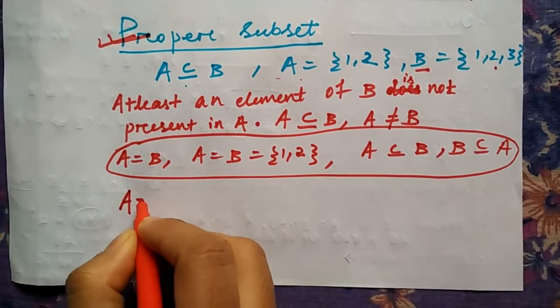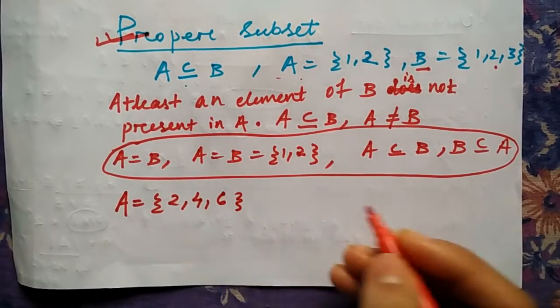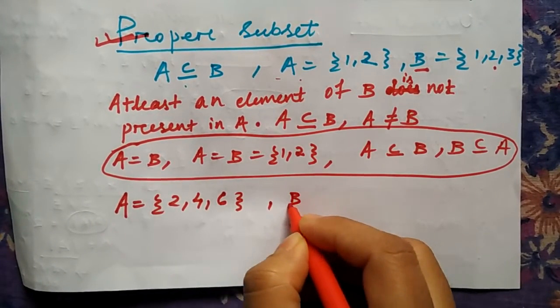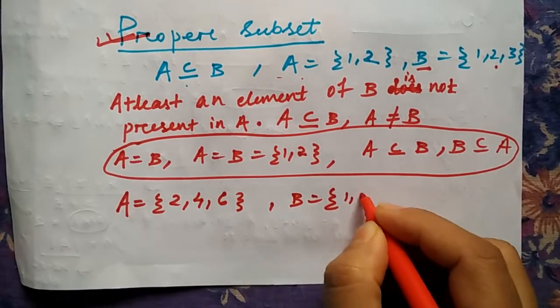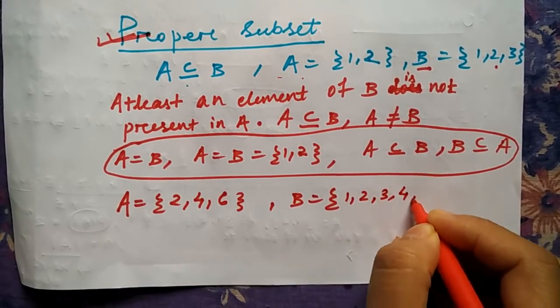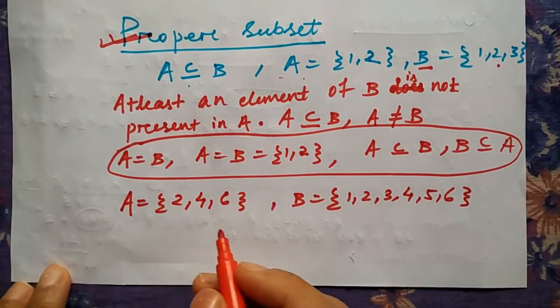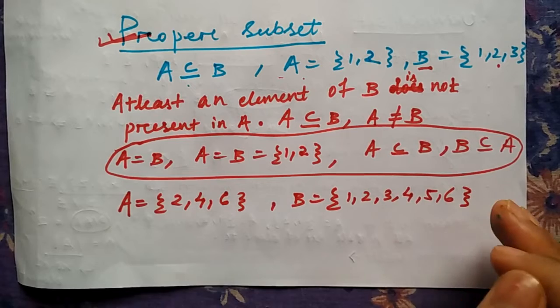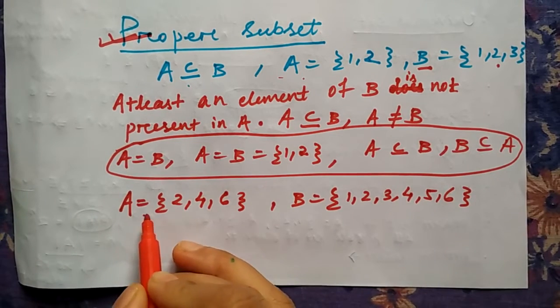Let me tell you one example. Let's say A contains only the even numbers {2, 4, 6}, and B contains all the elements as {1, 2, 3, 4, 5, 6}. Let's say some condition is given: in between 1 to 6, A should have only the even numbers and B should have all the numbers.